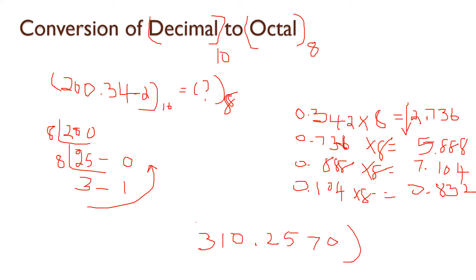The final octal number is 310.0257. This is the octal equivalent of the decimal number 200.342.